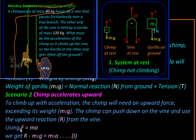We can apply Newton's second law F = ma. The net upward force will be R, the reaction coming from the vine on the chimp, minus the downward force m1g (the chimp's weight), which will equal m1a (mass of chimp times its acceleration).